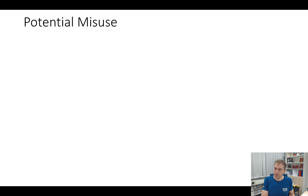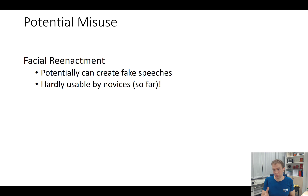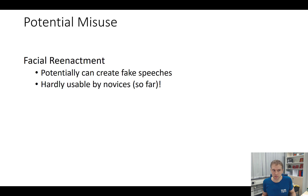When talking about potential misuse, we should make a clear distinction between facial reenactment and face swapping. If you have an existing video and can actually reanimate the facial motion, it appears that the person is potentially saying something different. Combined with audio manipulation, you can change the video accordingly and make it more convincing. So facial reenactment could potentially create fake speeches — this is a big, dangerous problem. Since this is a media forensics talk, I want to highlight the potential misuses of this technology.